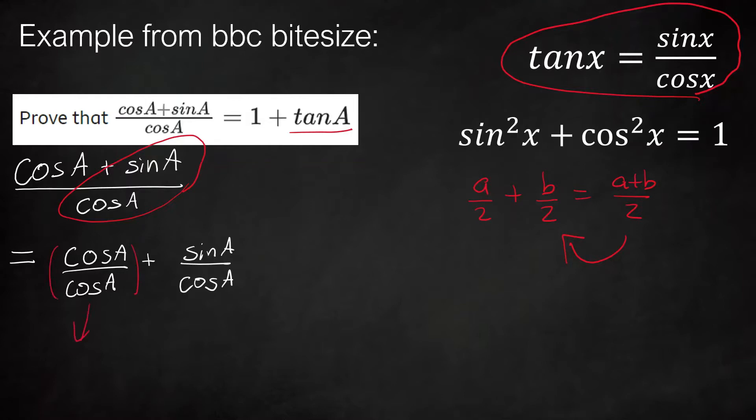The first one here is just one. The second one is our tan identity, so we can replace it with tan A because sine A over cos A is tan A. The x and A are interchangeable, it doesn't really matter. And that's done. One plus tan A, and that's finished.